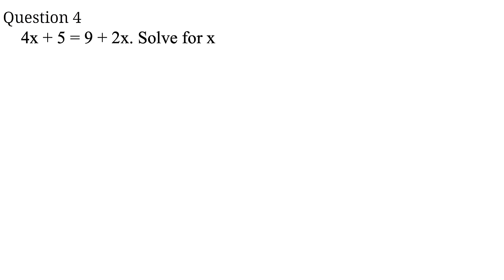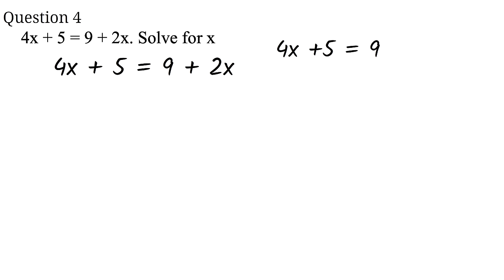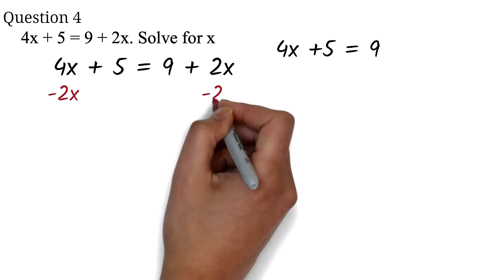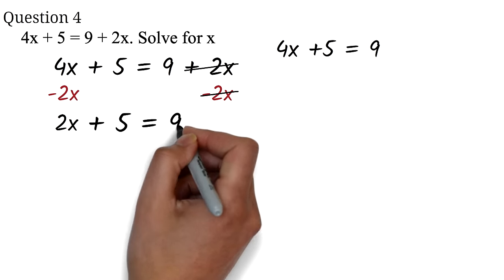Question 4: 4x plus 5 equals 9 plus 2x. Solve for x. In our previous questions, we have been having the x represented only once. But here we have the x represented twice. In a case like this, we want to move the x values to one side of the equation. You can choose to move the 4x or 2x. We'll move the 2x to the other side. Since the 2x is adding, we subtract 2x from both sides. The 2x cancels out. 4x minus 2x is 2x, so we have 2x plus 5 equals 9.